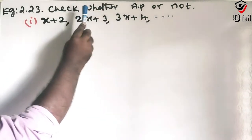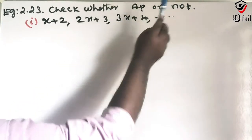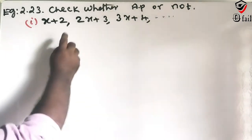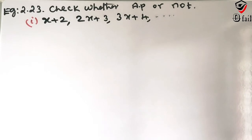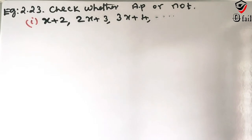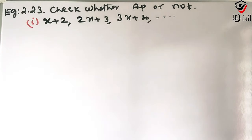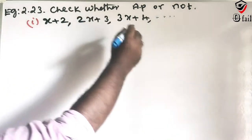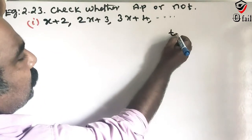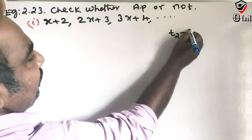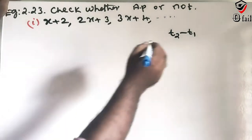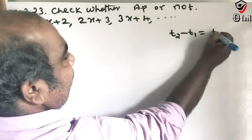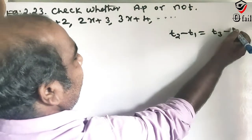Check whether AP or not. The terms are given. The condition to check for an AP is: T2 minus T1 equal to T3 minus T2.